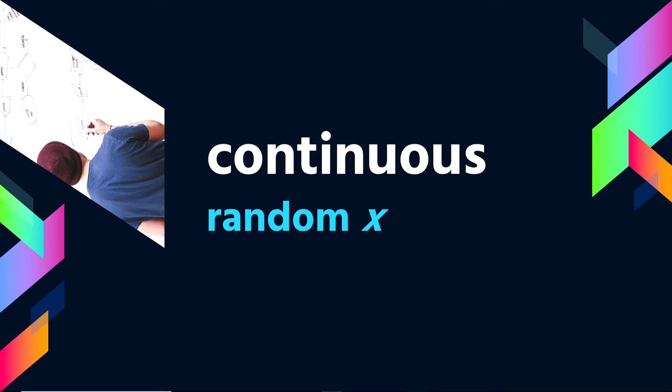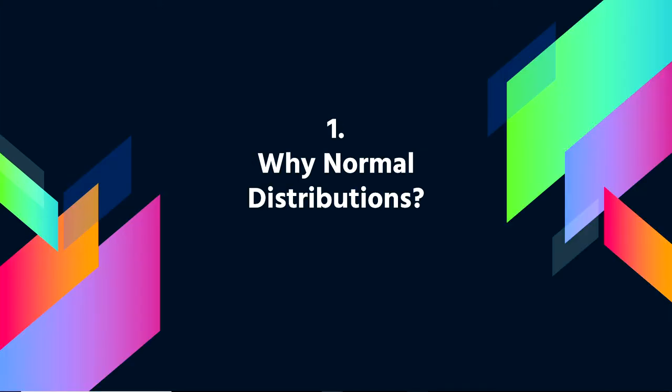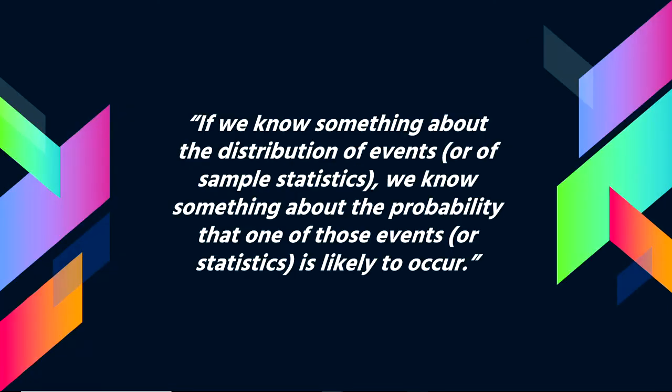Why do we care about normal distributions? I provide this quote from David Howell from the University of Vermont: 'If we know something about the distribution of events or of sample statistics, we know something about the probability that one of those events or statistics is likely to occur.' This allows us to get into probability and inference, so we can say that's highly unlikely and we should look for an explanation.